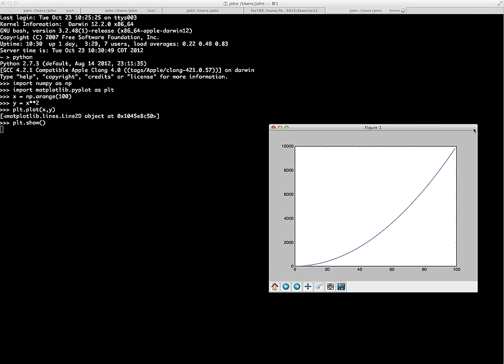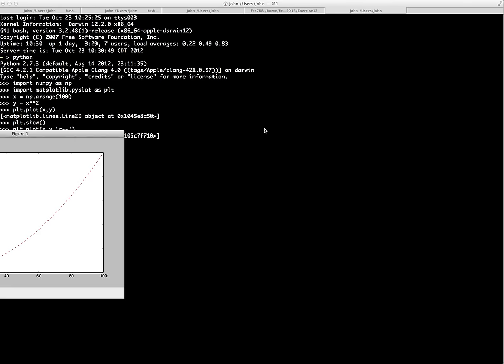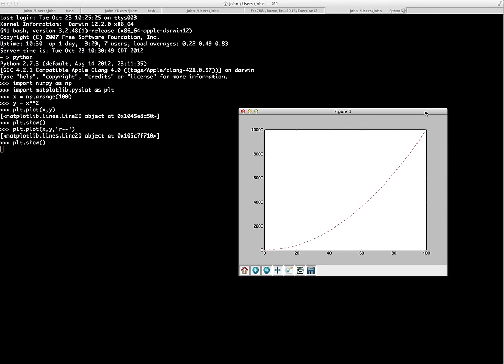So you can see the default is a blue line. I think that's exactly how it is in MATLAB. So when we close this window, it'll return us to the interactive prompt, and we could do something like, for instance, change it to a red dashed line.